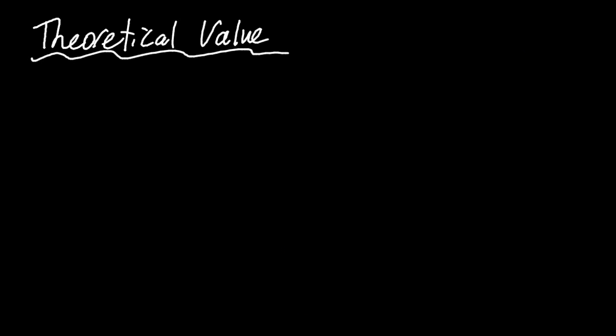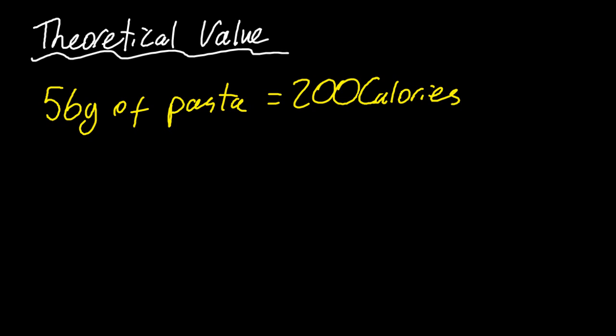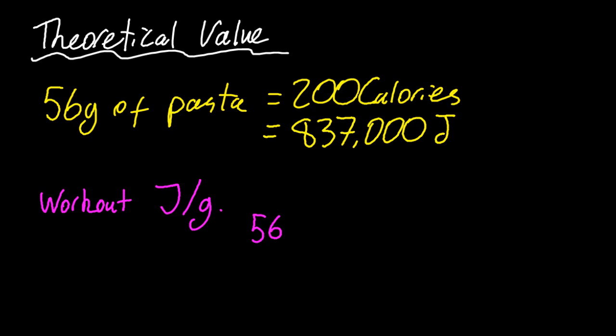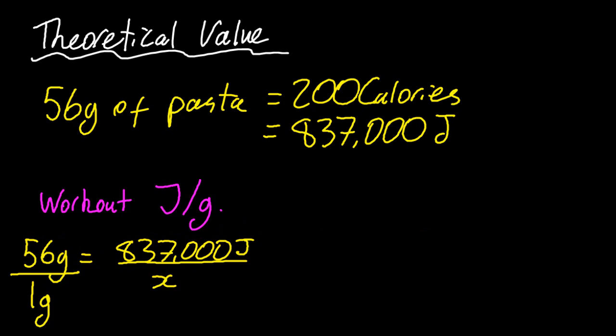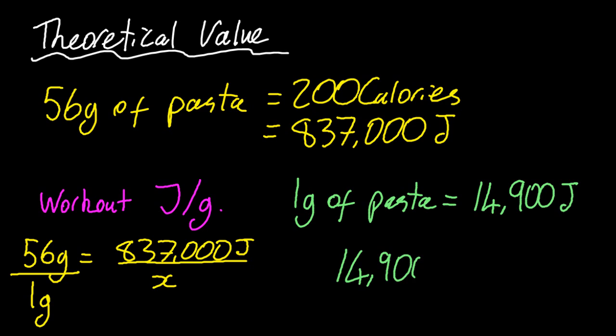Let's check the theoretical value. We're looking at the packet, 56 grams of pasta gave 200 calories. I'm going to ignore the sig figs here because I don't think Trader Joe's takes any notice of it, to be honest with you. Convert it to joules. And now once again, let's try and work out the joules per gram. So I'll illuminate the method a little bit more this time. So it's cross multiplication, 56 over 1, and that gives me the correct ratio to work out that one gram of pasta gives me that many joules. I'm going to stick with three sig figs, just kind of arbitrary. And that's my theoretical value.